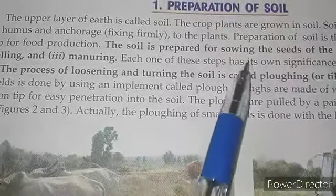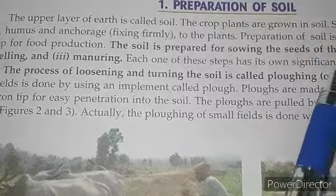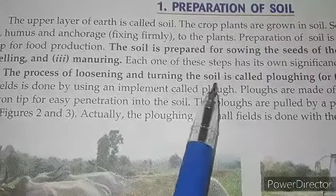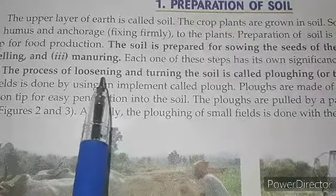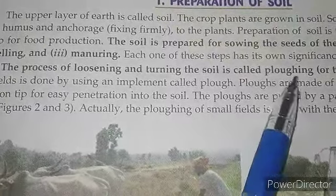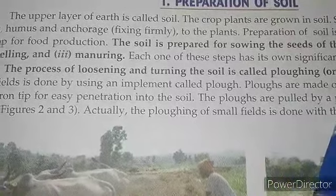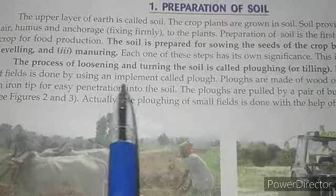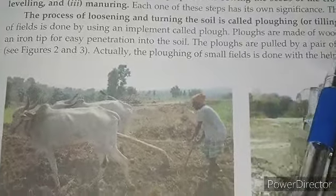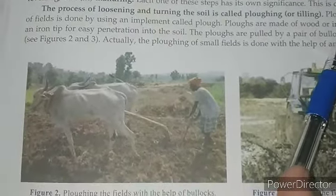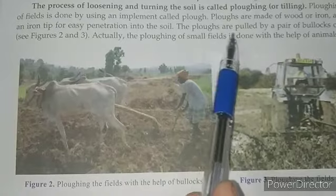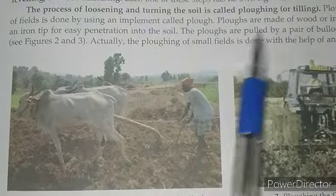The soil is prepared for sowing seeds by ploughing, leveling, and manuring. The process of loosening and turning the soil is called ploughing, and you can also say tilling. Ploughing of fields is done by using an implement called a plough. Ploughs are made up of wood and iron and have an iron tip for easy penetration into the soil. Ploughs are pulled by a pair of bullocks or by a tractor.